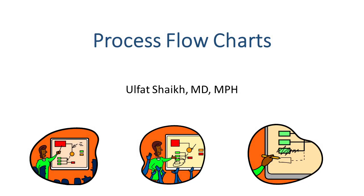This video is about process flowcharts. Quality improvement focuses on improving processes and outcomes. Through changing processes, we aim to make systems work better and ultimately improve outcomes. An important improvement tool is a flowchart, also called a flow diagram or flow map. It is essentially a picture that shows all key steps of a process in sequential order.